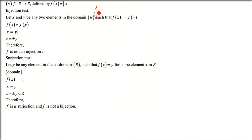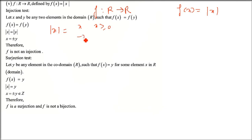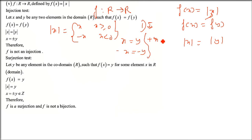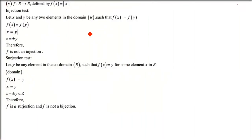Next, f(x) = |x| from ℝ to ℝ. Recall that |x| = x if x ≥ 0, and |x| = -x if x < 0. Checking injection: |x| = |y| leads to x = ±y across four cases. We get two values, so this is not one-to-one - injection fails.